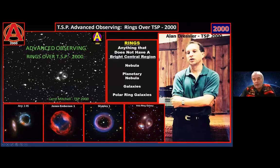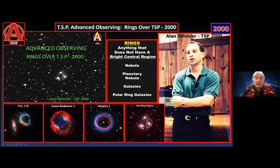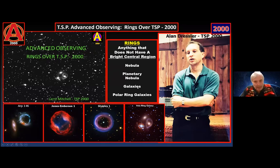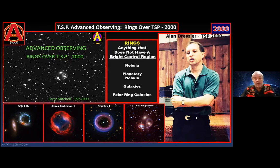I'm going to start covering each year beginning with 2000. In the left-hand corner of each year is the cover slide from the lecture I gave for that year's observing program. In 2000, the subject was 'Rings over the Texas Star Party.' That was a rather difficult start, because when you take the center out of a galaxy or any of these objects, you're taking the brightest part away — leaving the faintest outer regions. These objects included nebulae, planetary nebulae, galaxies, and polar ring galaxies — anything without a center.